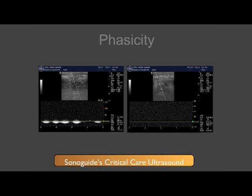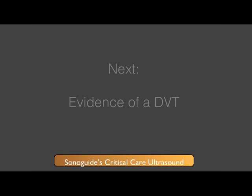Here is a side-by-side comparison for you to see the difference. These were taken from the same patient, with the normal leg seen on the left side of the screen and the leg with the DVT on the right. That completes this section on augmentation and respiratory variation. In the next section, I will discuss putting all of these techniques together to provide evidence of a DVT.